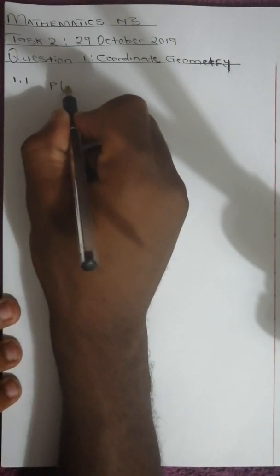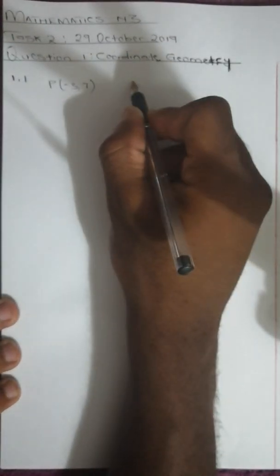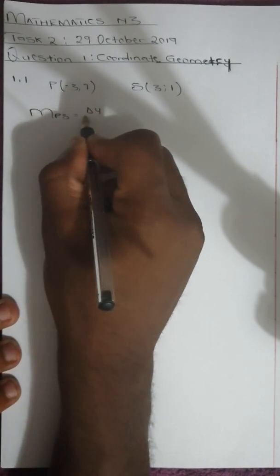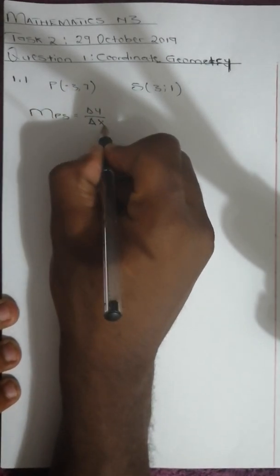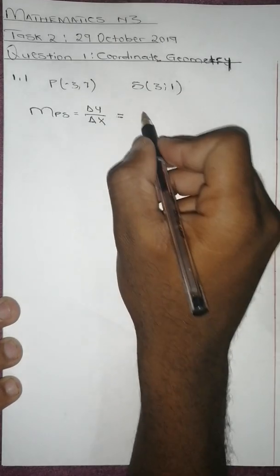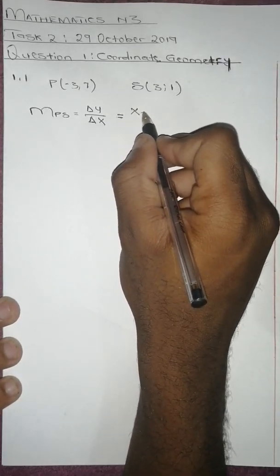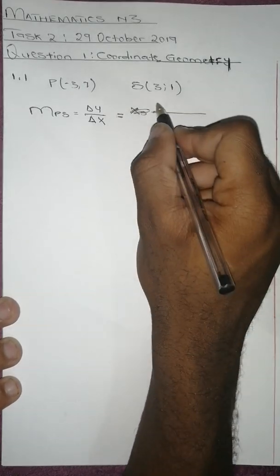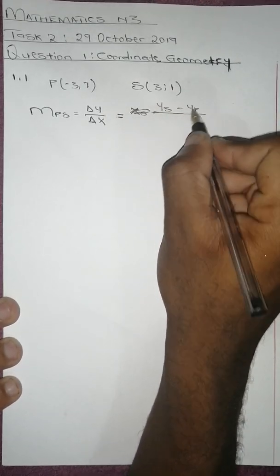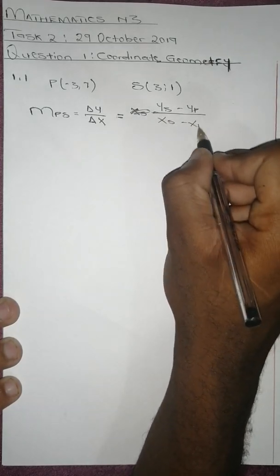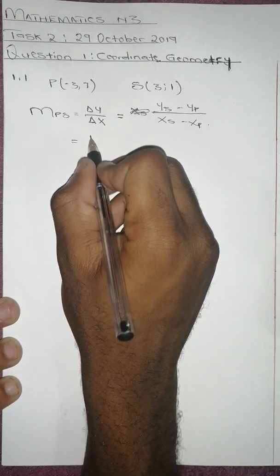Question 1.1 asks for the gradient of PS. Point P has coordinates negative 3 and 7, and S has coordinates 3 and 1. We know that the gradient equals change in y over change in x, which is y_S minus y_P over x_S minus x_P.